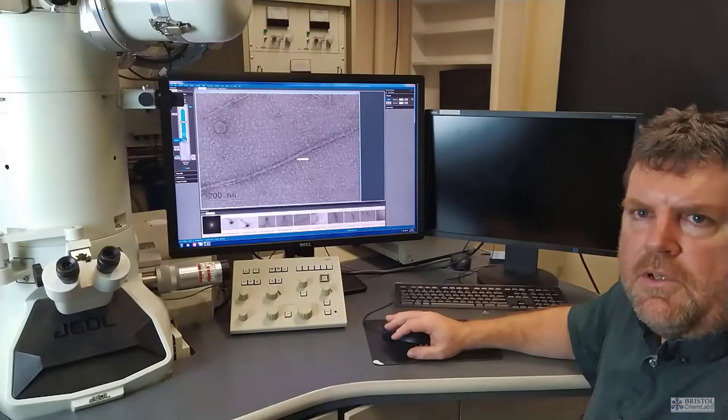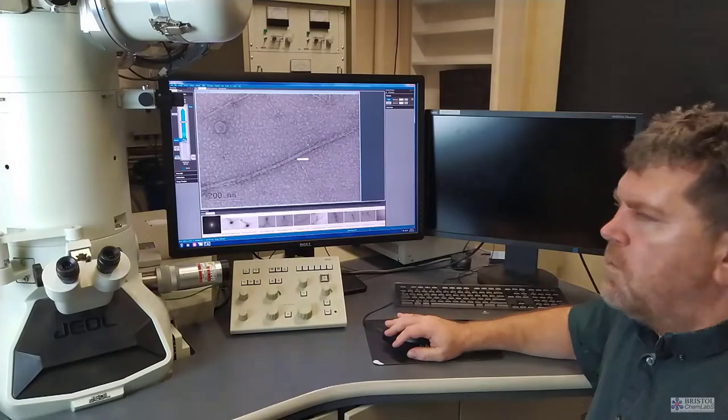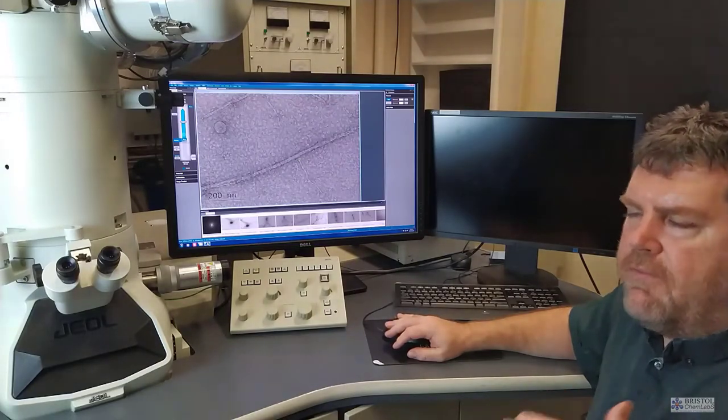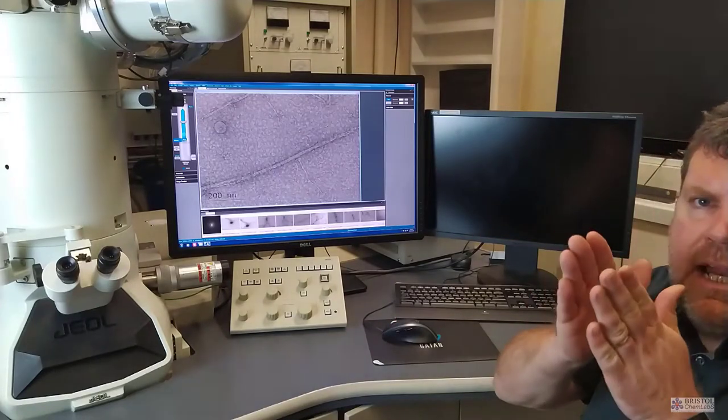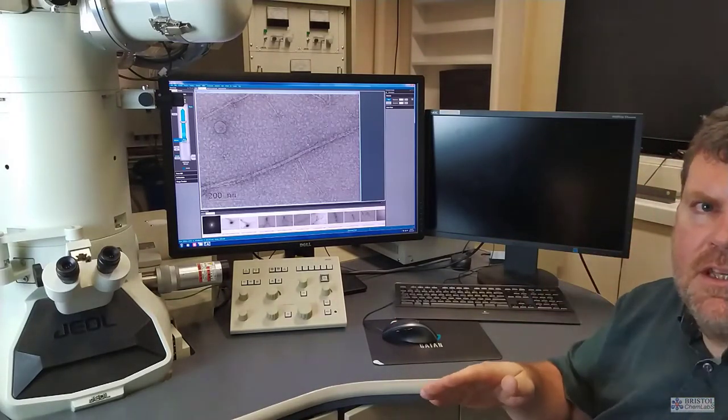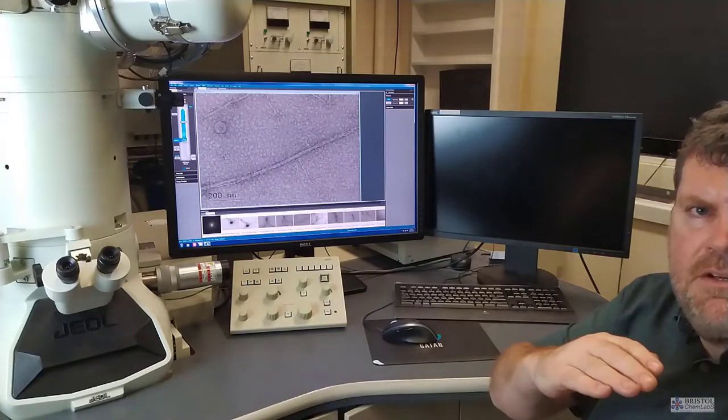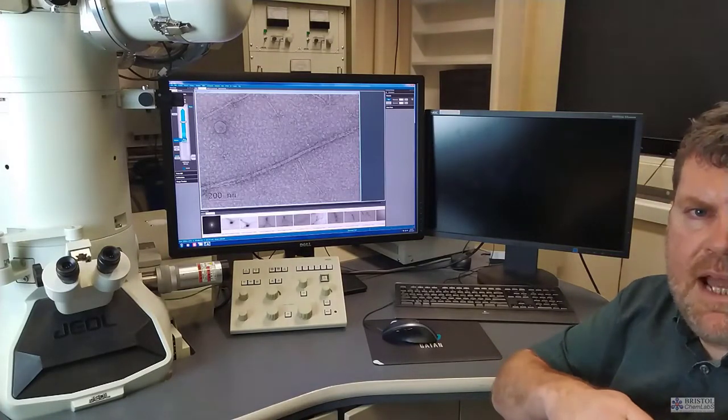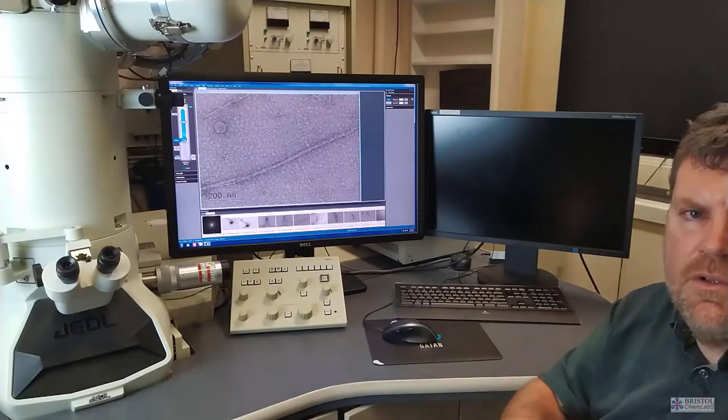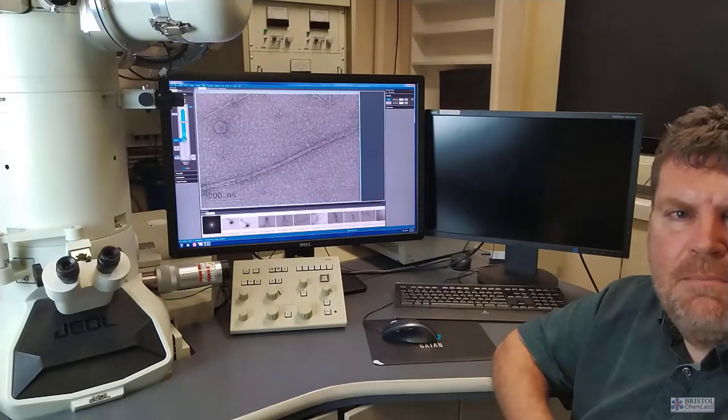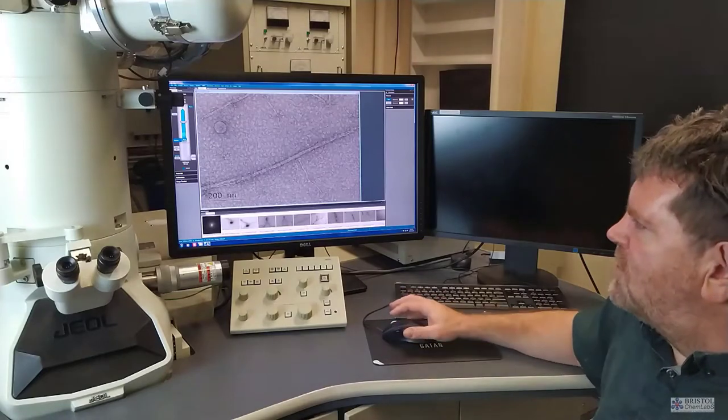For inorganic materials like gold, which are very high atomic weight, we get very good contrast in the transmission electron microscope. Because effectively, the electron beam is being scattered by the constituent atoms. So the thicker a material is, or the constituent atoms are higher atomic weight, the more they're going to scatter the electrons. Those particular regions will appear darker in the image.